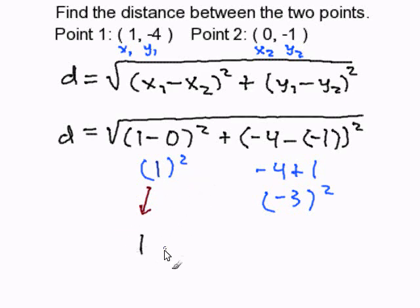1² becomes 1, -3 squared will become 9, and I'm going to write my equation: square root of 1 plus 9 equals the distance.